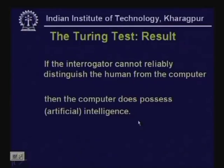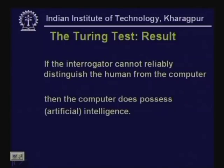If the interrogator cannot reliably distinguish between a human answerer and a computer answerer, then we can say that the computer system possesses artificial intelligence. This is the test devised by Turing to find out whether the machine has been able to match human intelligence in answering questions.